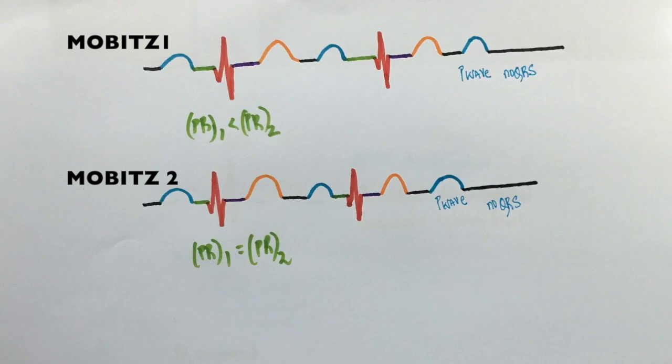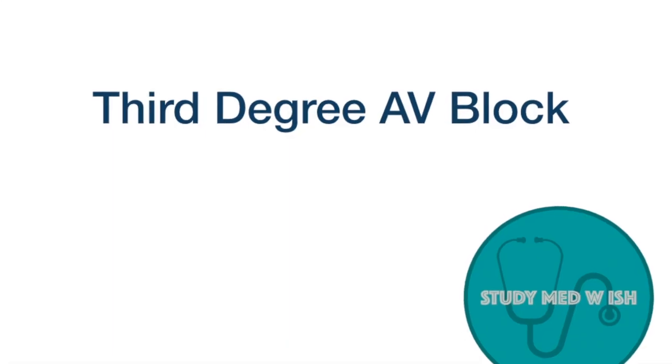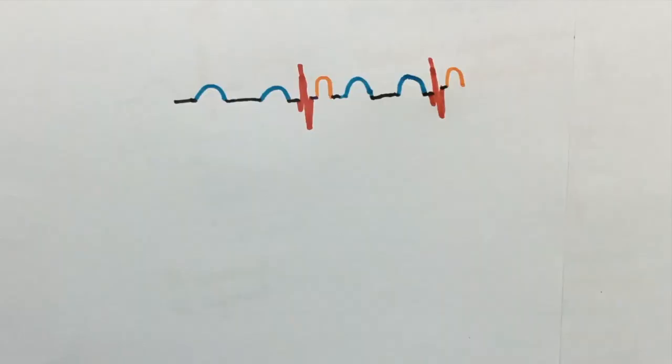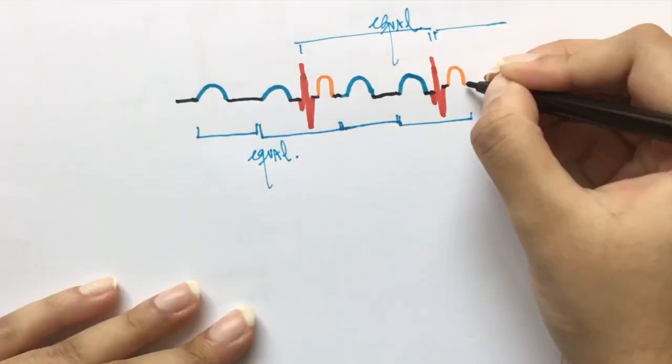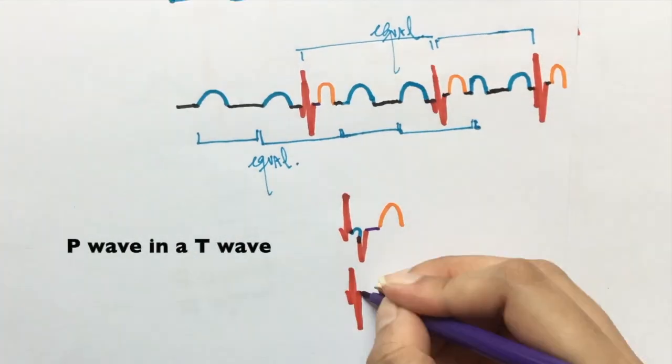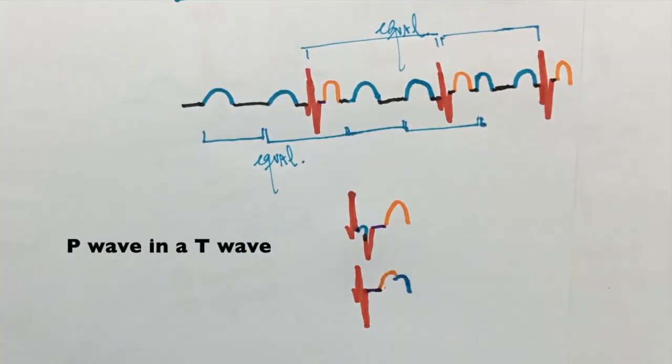The next one is third-degree AV block. In this, the atria and ventricles beat independently of each other. Sometimes there could be a P wave inside a QRS complex or even inside a T wave. This type of heart block definitely requires a pacemaker.